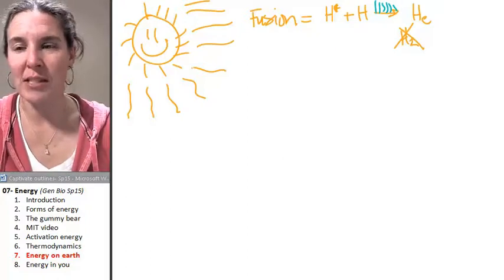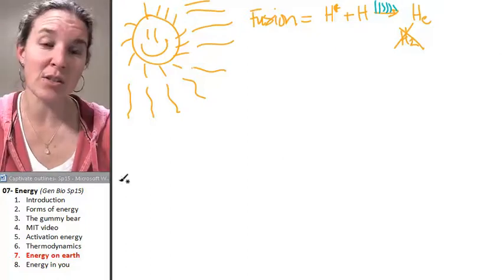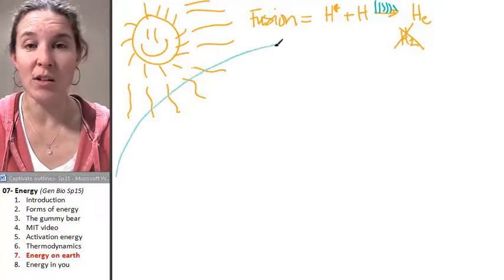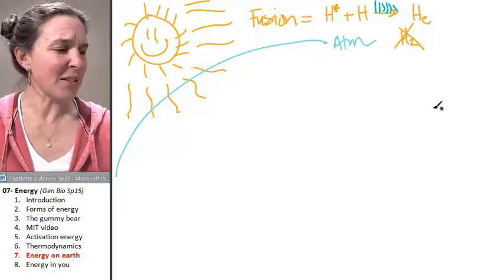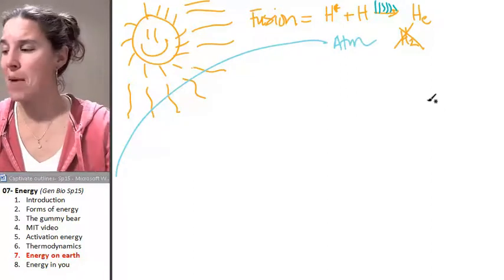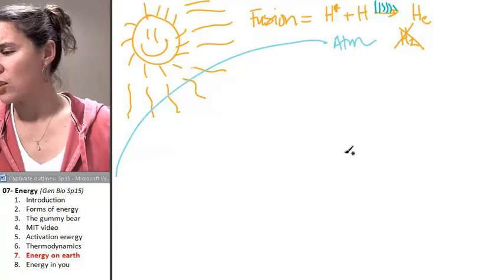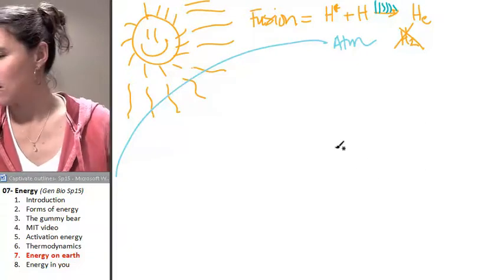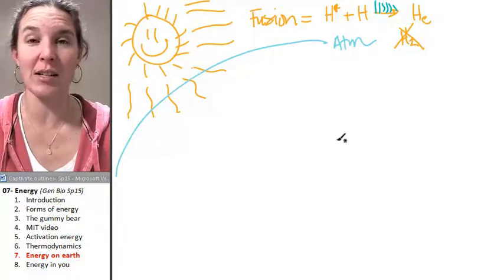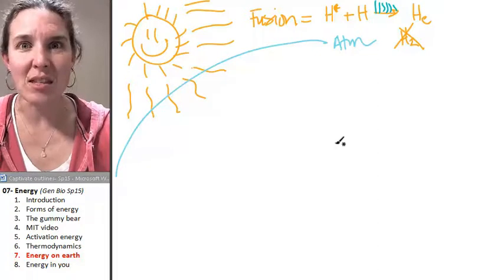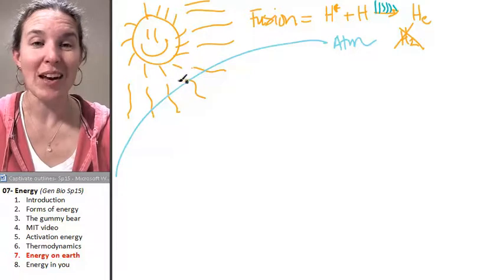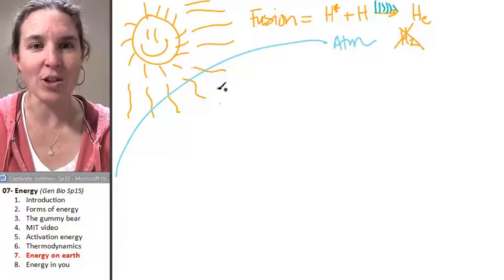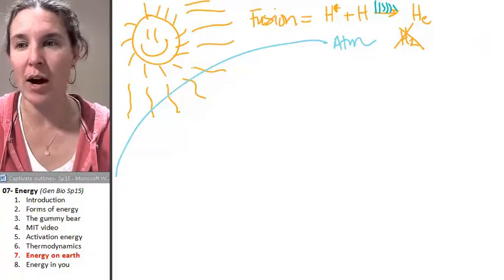Light energy comes down, and it enters the earth's atmosphere. So this is the atmosphere. And I have some facts on here. Seriously, two billionths of all the light energy that the sun is producing in any moment, two billionths of that actually makes it through into our atmosphere.